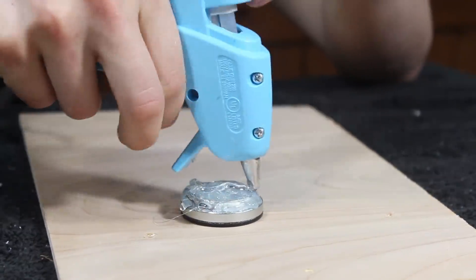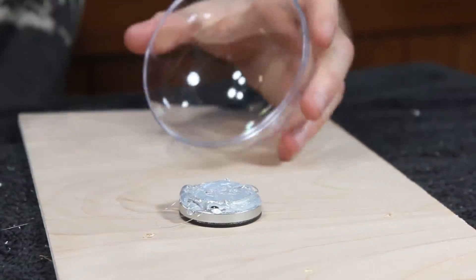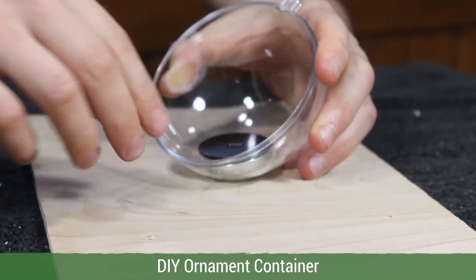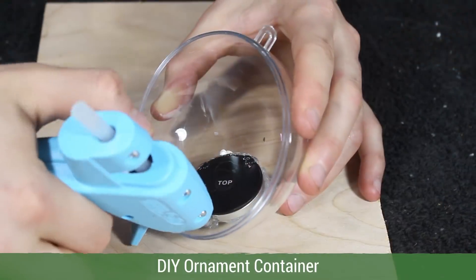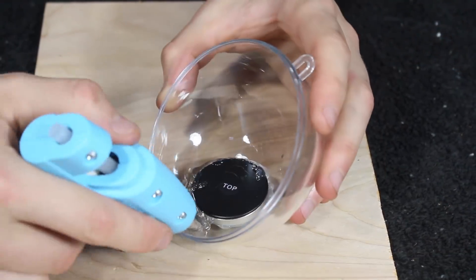I first covered the underside of the magnet and then placed it into the bottom of a DIY ornament container. Then I proceeded to cover the rest of the magnet with hot glue.